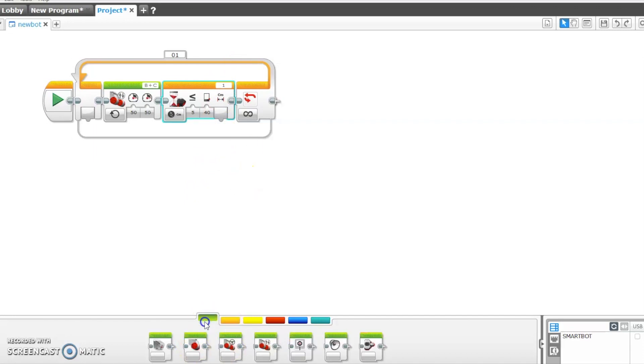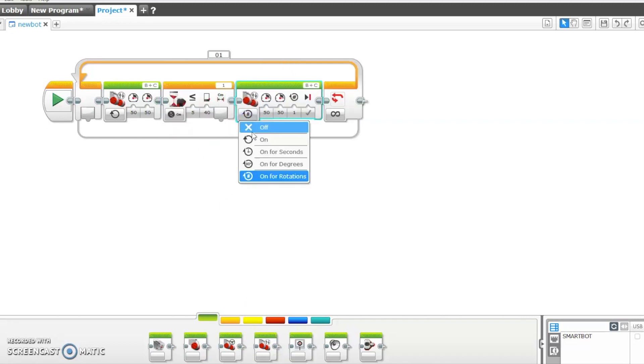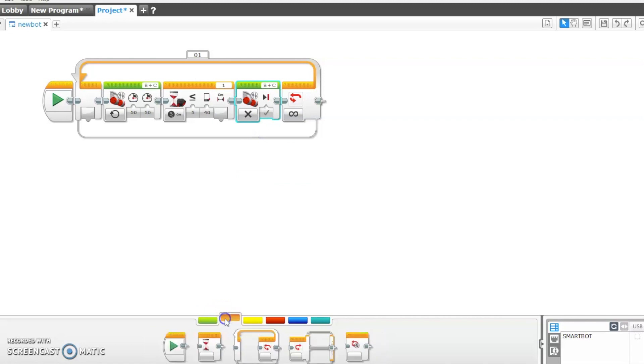Now we will put a Move Tank block that helps the robot to stop. Now we will set the motion to off. Then we will put the wait block and put it in one second.